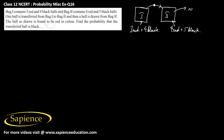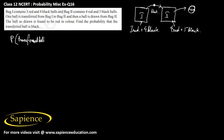The ball drawn from bag two is found to be red in color. We have to find the probability that the transferred ball is black, given that the ball drawn from bag two is red.